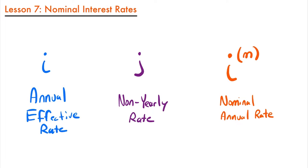Now we're going to be talking about nominal annual rates, or nominal interest rates, but they're actually not too different — they're just another way to present the rates that we are already familiar with. The notation for our nominal annual rate means we have an interest rate i, an annual rate, that is compounded m times per year. Sometimes we say it's convertible m times per year.